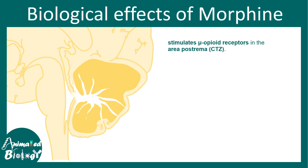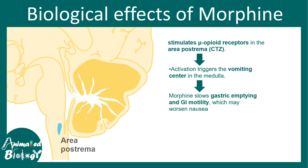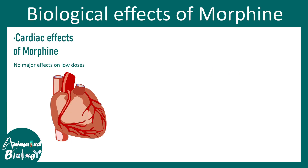Other effects of morphine include stimulation of an area known as the area postrema in the brain, which activates the vomiting center in the medulla — creating a nausea-like feeling, especially in overdose or in people who should not take morphine. Morphine also slows gastric emptying and GI motility, which can worsen nausea. If too much accumulates in the stomach, it increases the likelihood of vomiting. Overall, one has to remember that the area postrema is modulated by morphine.